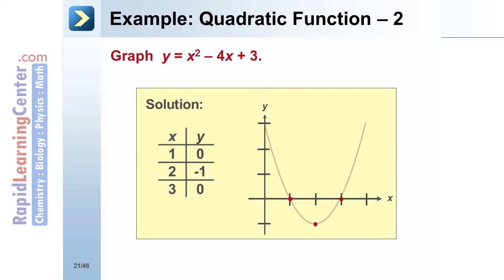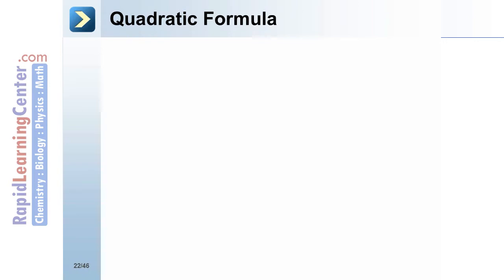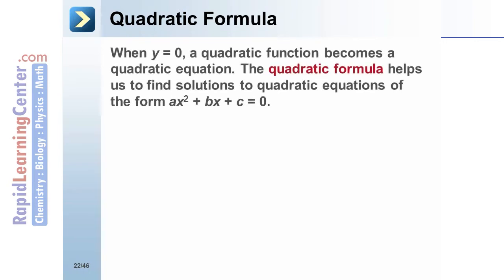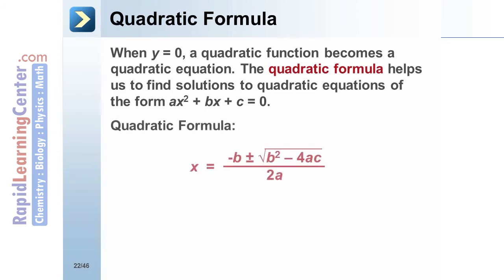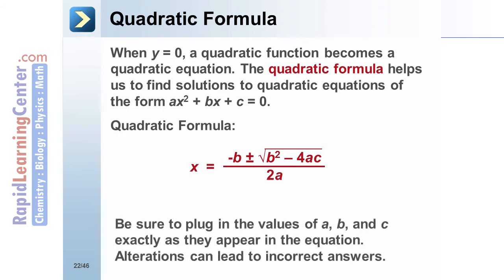Connect the points with a curve to complete the graph. Quadratic Formula: When y equals 0, a quadratic function becomes a quadratic equation. The quadratic formula helps us find solutions to quadratic equations of the form ax squared plus bx plus c equals 0. x equals the quantity negative b plus or minus the square root of (b squared minus 4ac), all over 2a. Be sure to plug in the values of a, b, and c exactly as they appear in the equation. Alterations can lead to incorrect answers.